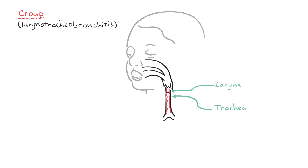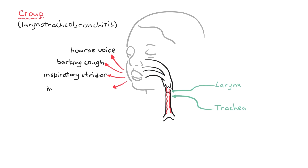This leads to the characteristic features of croup: a hoarse voice, barking cough, inspiratory stridor, and increased work of breathing. Croup is the most common infectious cause of airway obstruction in children, usually between 6 months to 3 years of age, and is more common in boys than in girls.